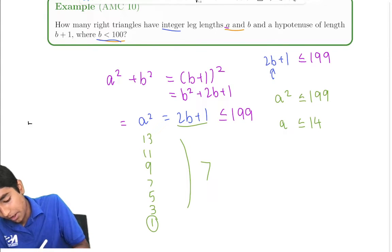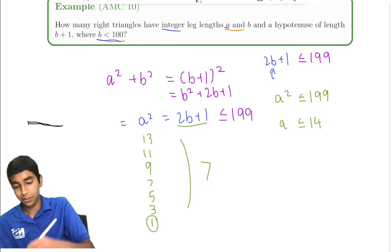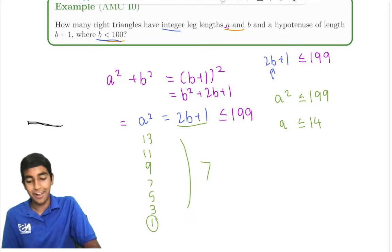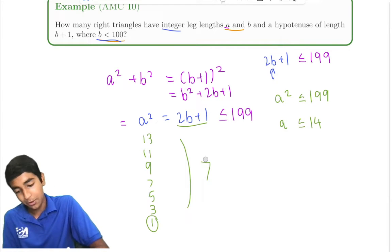There's no right triangle anymore, it's just a line. b can't be 0. You can't have a leg be 0 in a right triangle. So it's actually 6 that actually works.